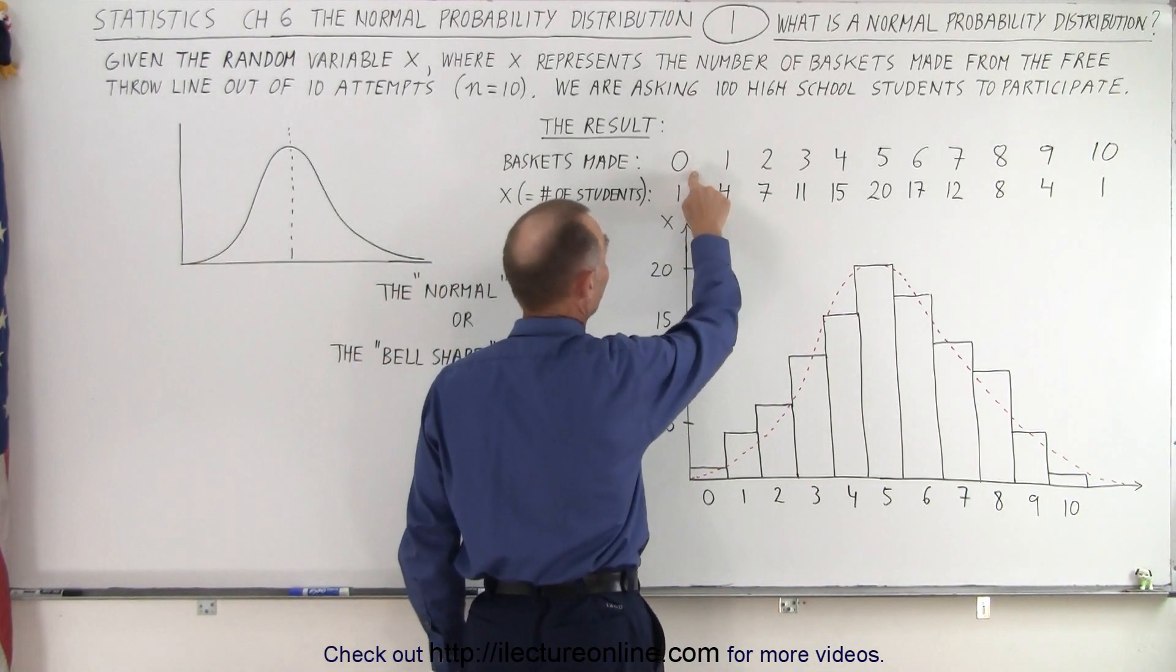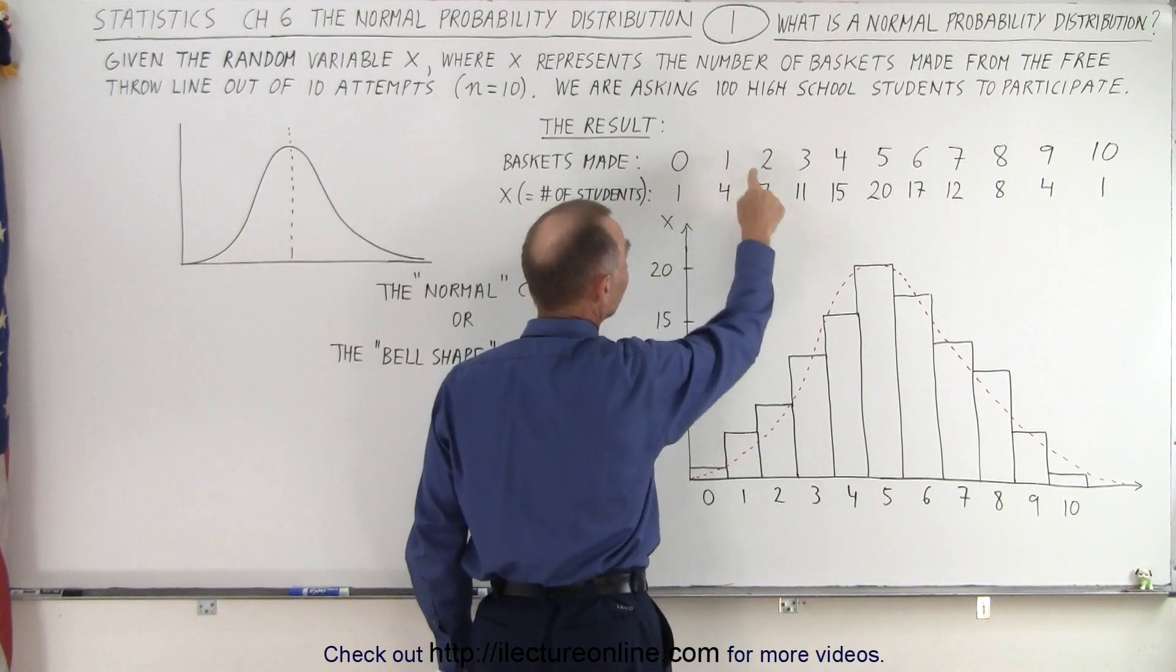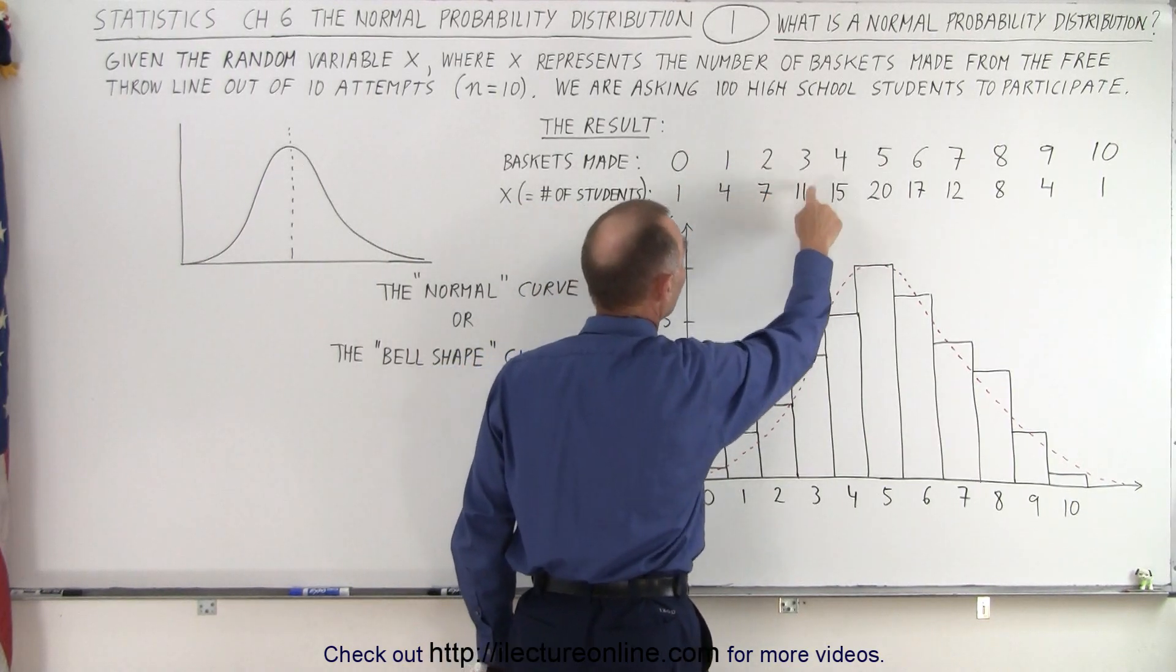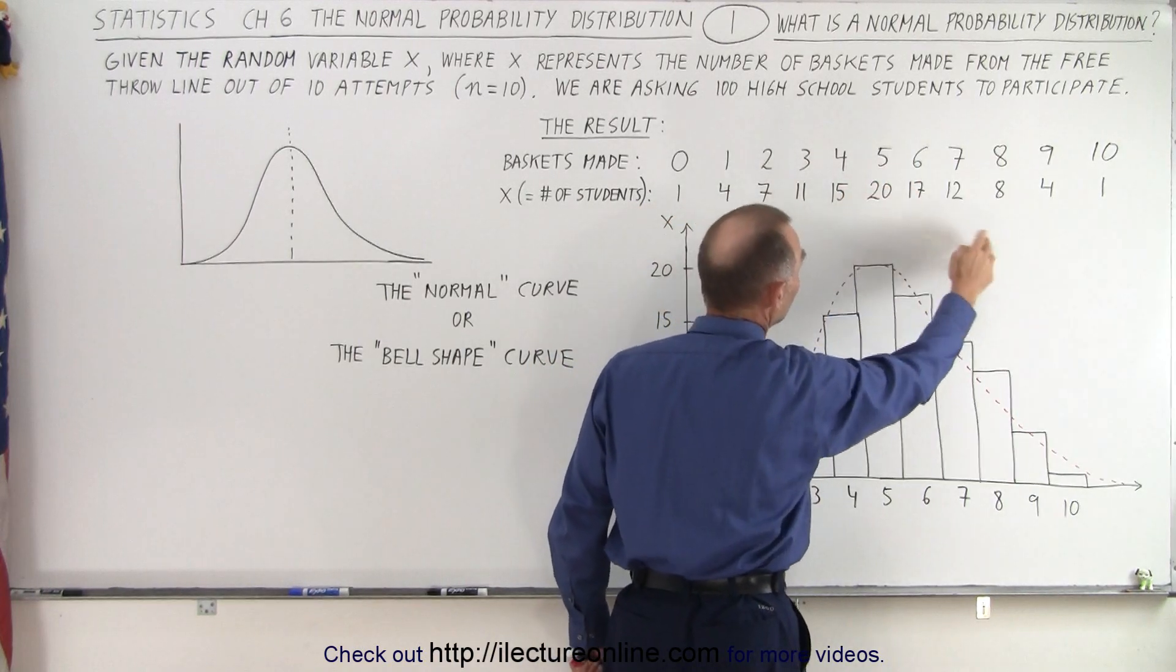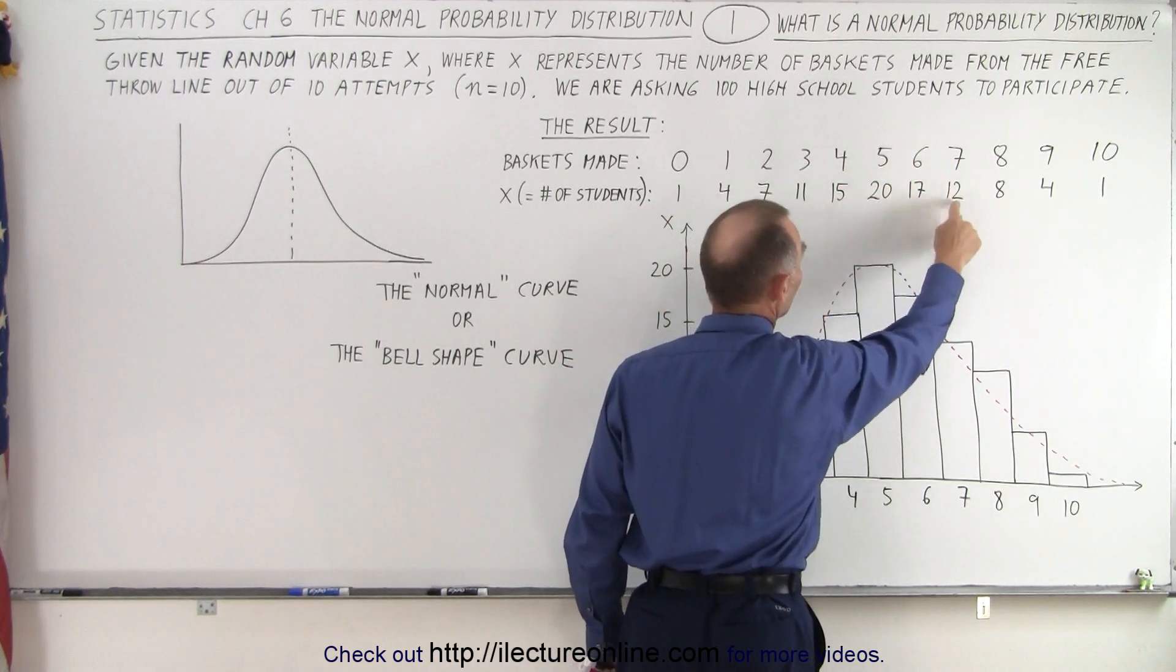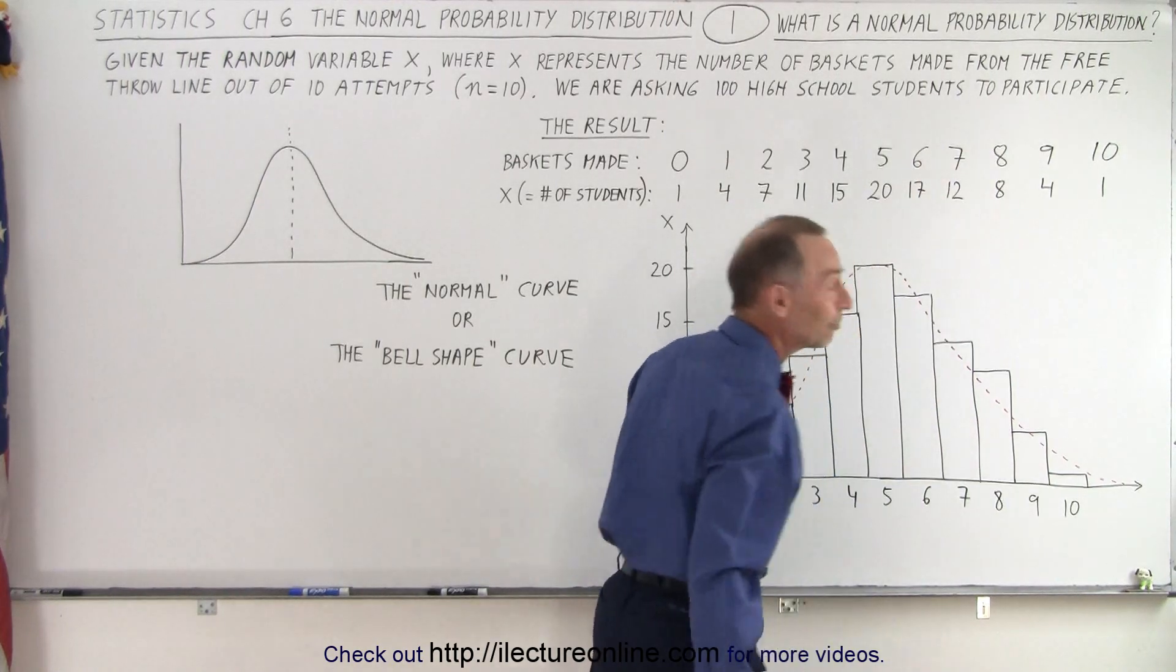So in this case, we have one student that made 0 baskets, 4 that made 1 basket, 7 that made 2, 11 that made 3, 15 that made 4, 20 that made 5, and then it starts decreasing again, 17 that made 6, 12 that made 7, 8 that made 8, 4 that made 9,